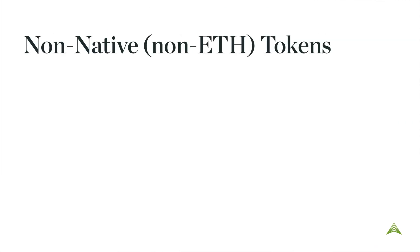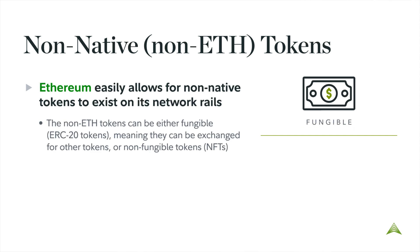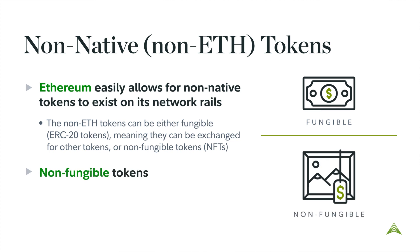There are other tokens besides ETH on the Ethereum network. Unlike Bitcoin, Ethereum easily allows for non-native tokens to exist on its network rails. These non-ETH tokens can be either fungible, meaning they can be exchanged for other tokens, or non-fungible tokens, also known as NFTs.